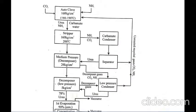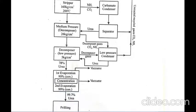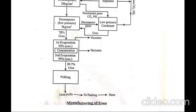The urea manufacturing process flow sheet is provided. You can draw the flow sheet on paper, matching the details discussed in the process description with each box in the diagram to understand the complete process.